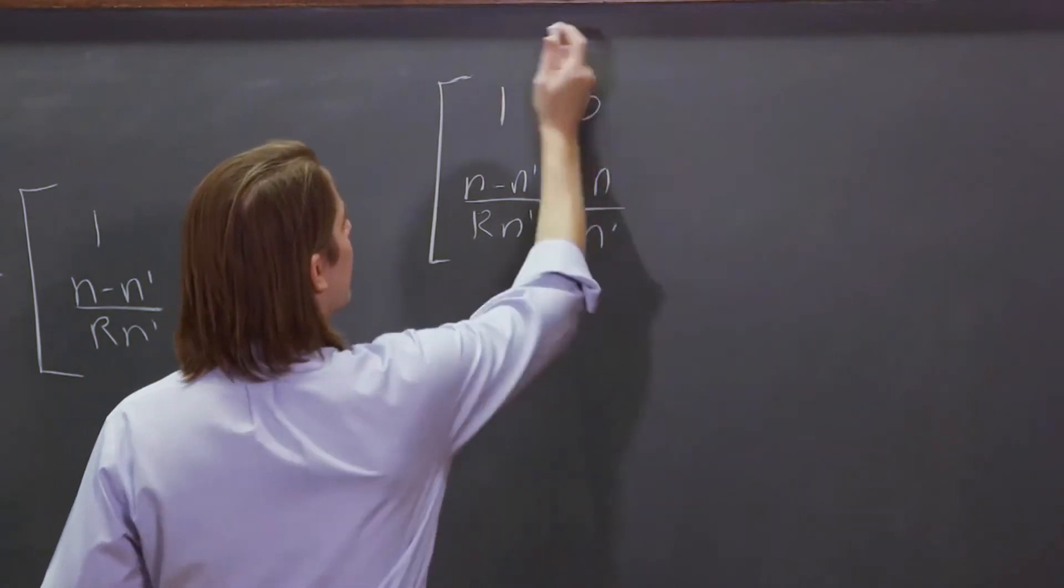So, let's do a quick use of it, and just see one little thing we'll learn. 1, 0, n minus n prime over r n prime, n over n prime, just for practice.